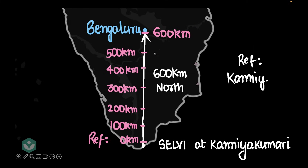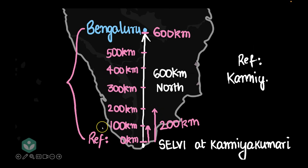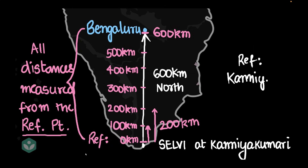When you travel 100 kilometers from home, you reach a certain point. When you travel 200 kilometers from home, you've traveled further along. Notice that all these distances are measured from the same reference point — and in this case, that reference point is Kanyakumari.